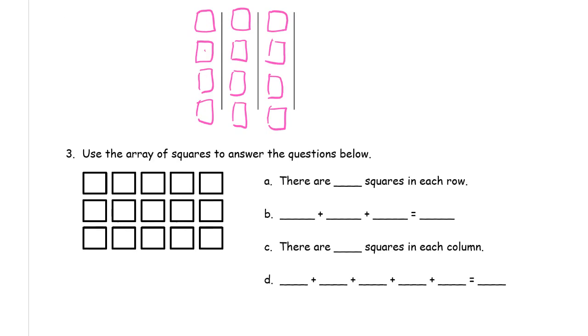Use the array of squares to answer the questions below for A, B, C, and D. There are how many squares in each row? 1, 2, 3, 4, 5. 5 in each row.